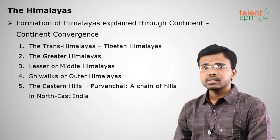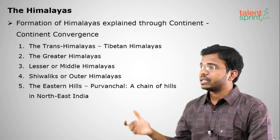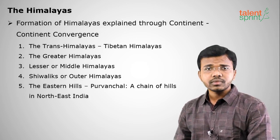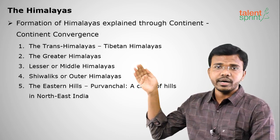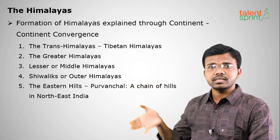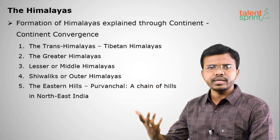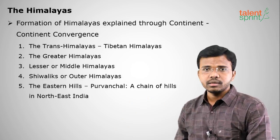The Himalayas are divided into five parts: the Trans-Himalayas or Tibetan Himalayas, the Greater Himalayas or Himadri, the Lesser Himalayas or Himachal, the Shivaliks or Outer Himalayas, and the Eastern Hills or Purvanchal. The Himalayas bend at the Dihang Gorge in Arunachal Pradesh towards the eastern side into Nagaland and Manipur — these are called Purvanchal, meaning 'eastern.'